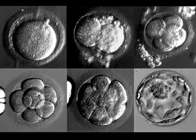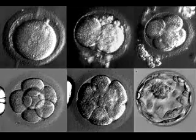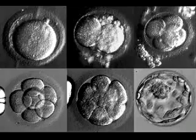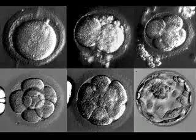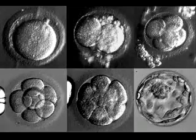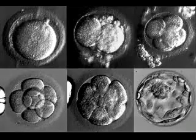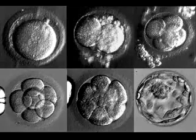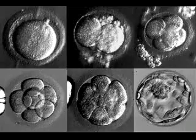Then cell division occurs sort of within this zona — you can see it sort of creating that zone. The egg is confined in there. It splits into two, and then the two splits into four, and then the four splits into eight. There's one on top and one on the bottom. Then the egg reaches sixteen cells.